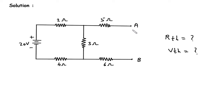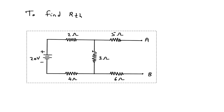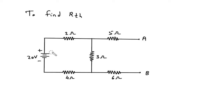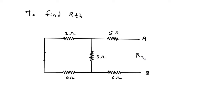Here the RL is absent, so to find Rth we will turn off all the sources. Here we can see if we turn off this voltage source, it will be short circuit. Now this will be Rth.